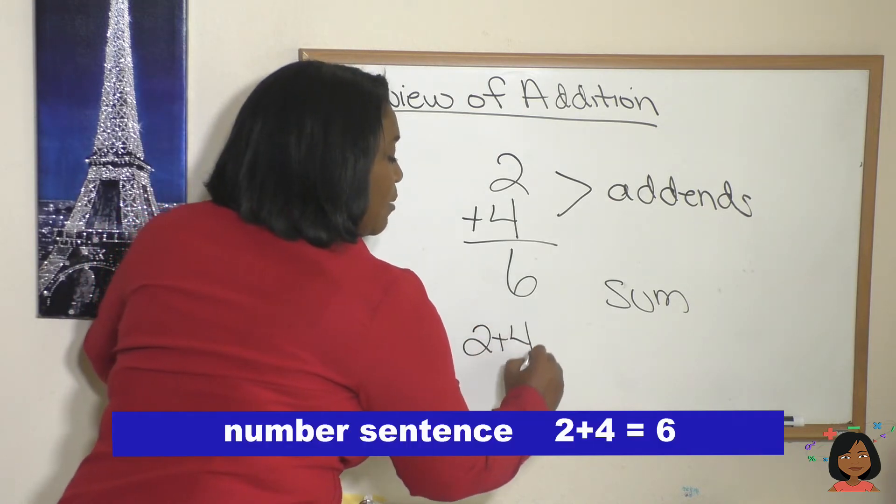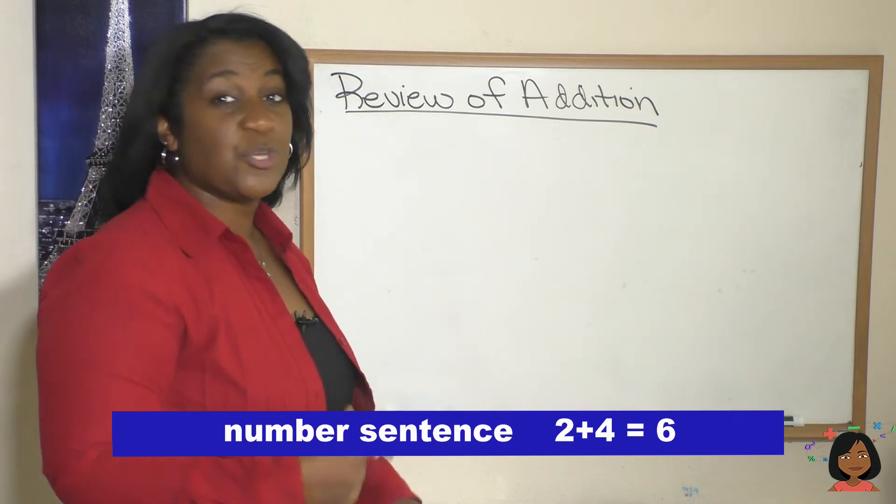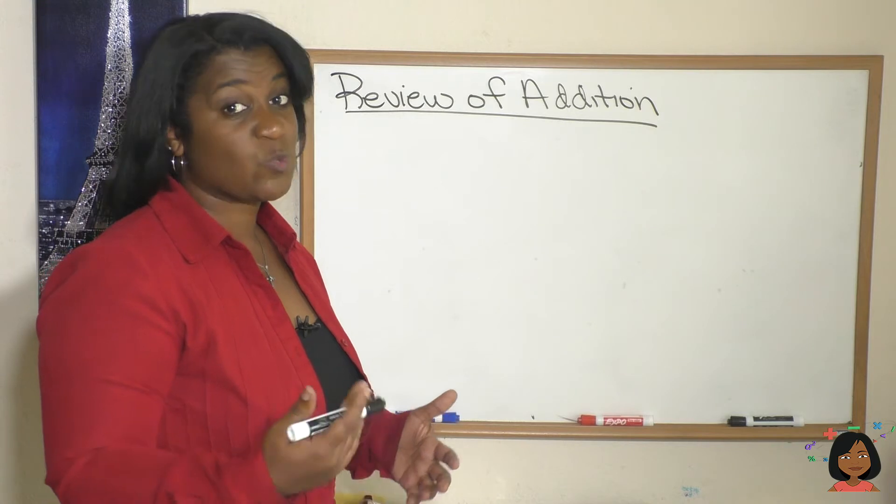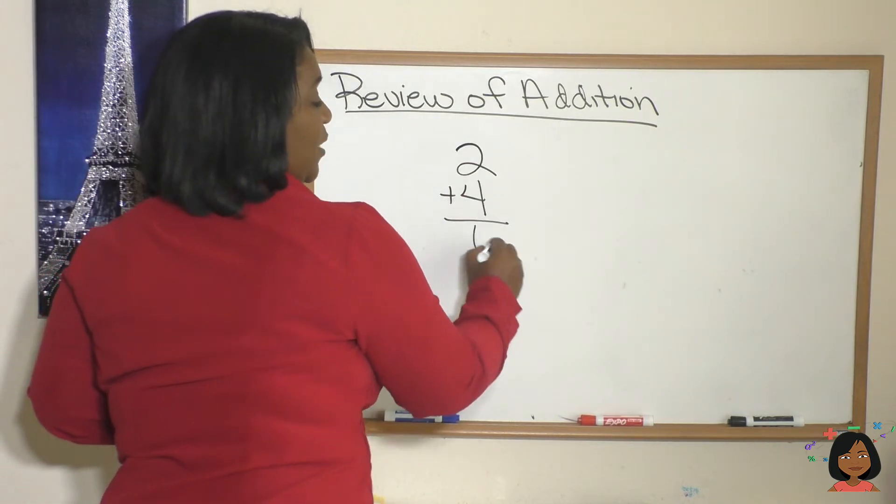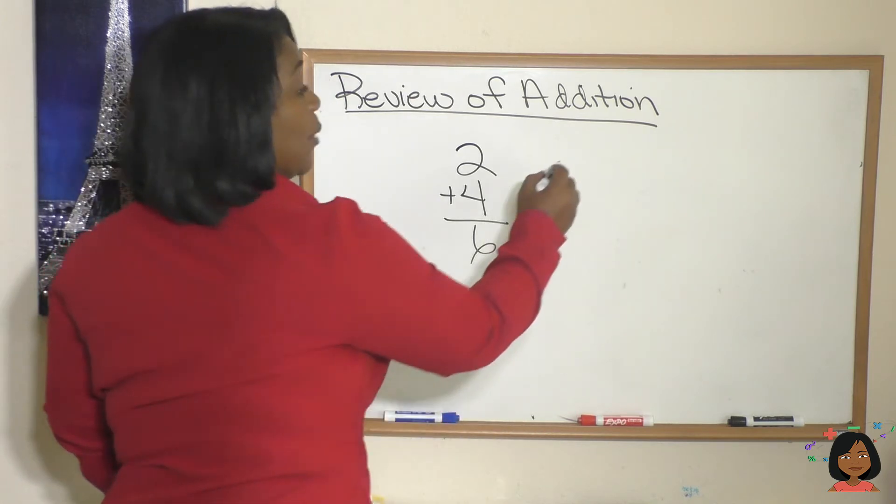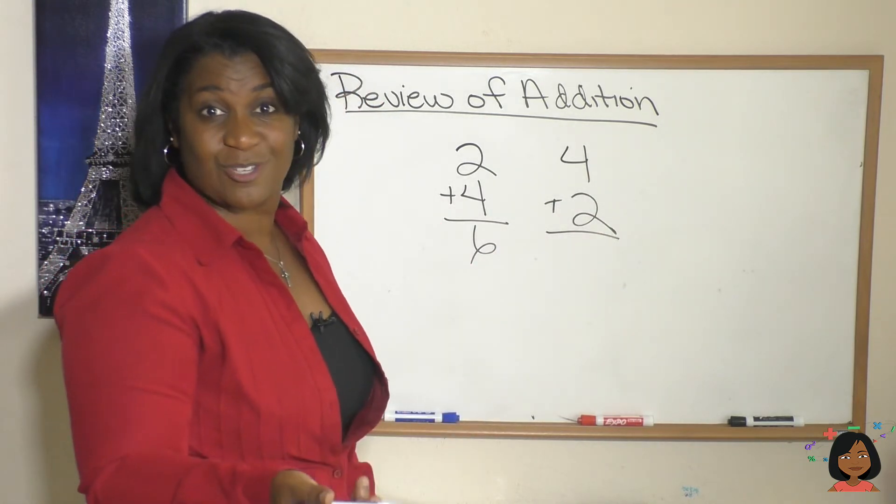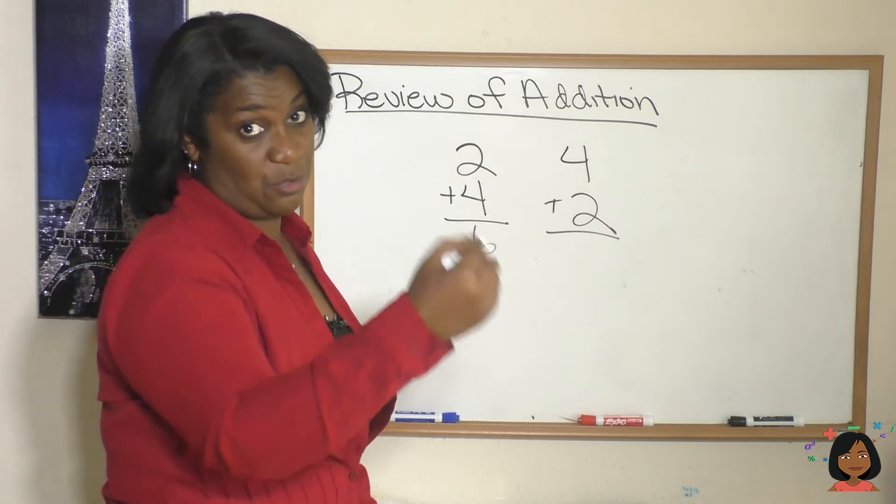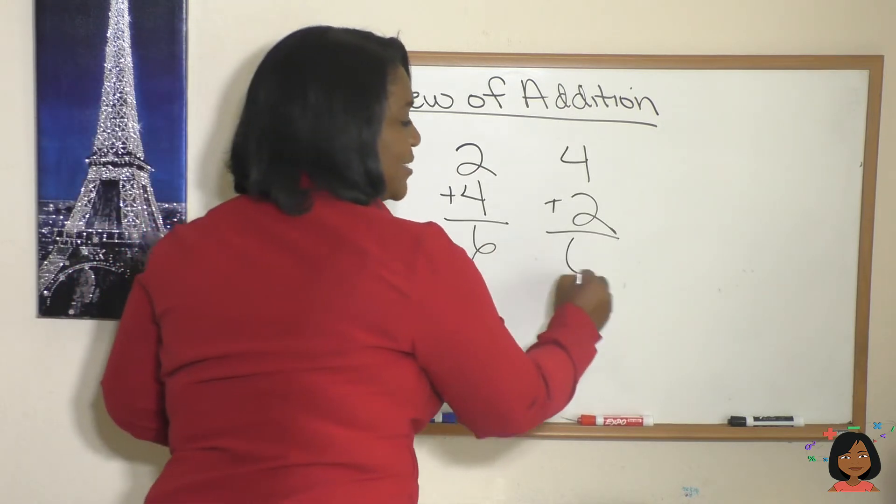Do you think it would have mattered the order that we added the Lincoln logs in? Because first we just did 2 + 4 and we got 6, but what if we had started with the second column? We started with the four and we did 4 + 2. Do you think it would still have been the same answer? And the answer would be yes, right? We would have said one-two-three-four and then added five and six. We still would have gotten six as the answer.